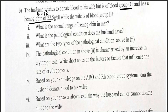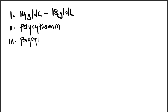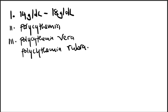Part B3 asks for the two types of the pathology — polycythemia. The two types are: polycythemia vera and polycythemia rubra, also referred to as primary polycythemia and secondary polycythemia.